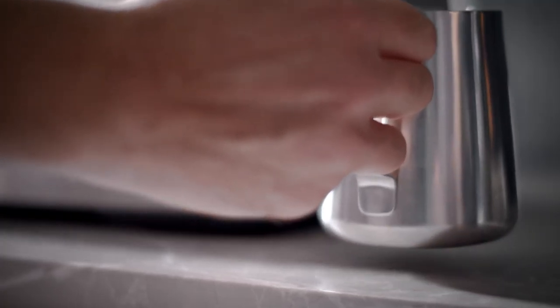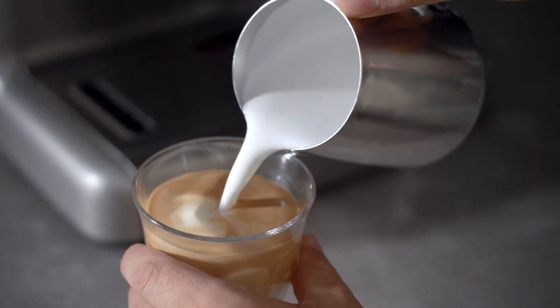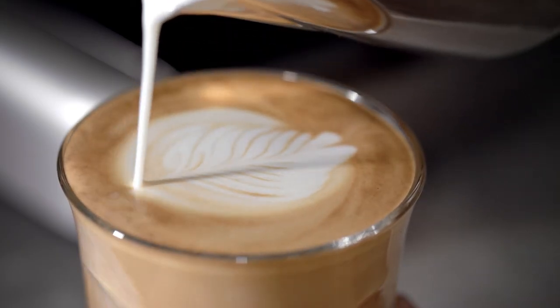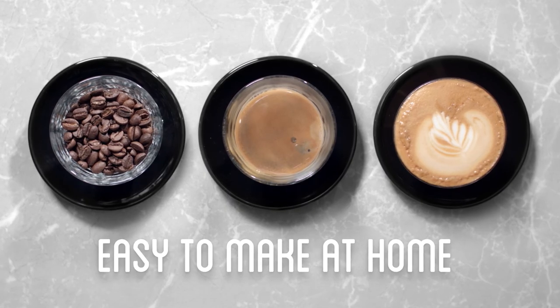Tap the jug to release larger air bubbles. Swirl to blend the milk and create a silky texture and gently pour into your coffee. It's that easy. Now enjoy your great tasting coffee from the Sunbeam Barista Max.